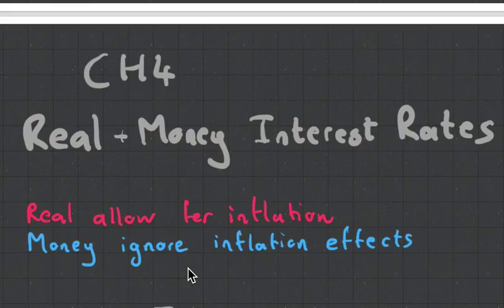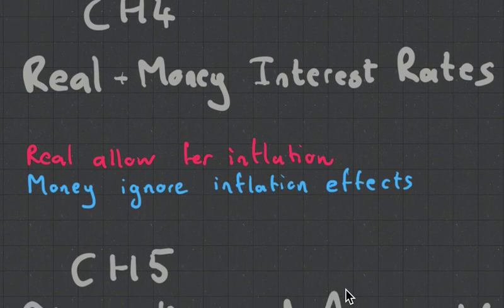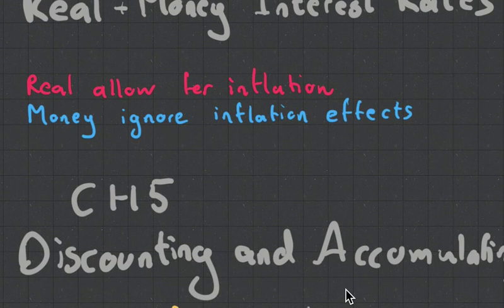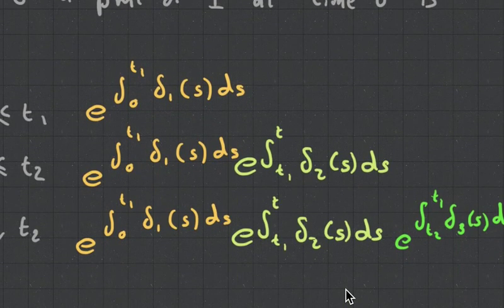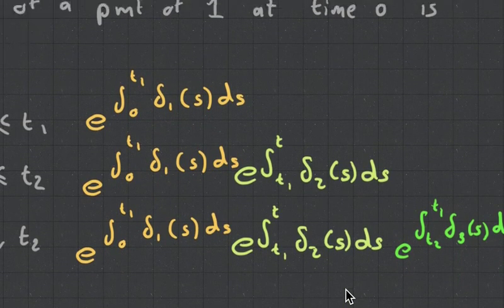Check that out. Next chapter is on discounting and accumulating. And it's going to be, as you can see, much more mathematical than this chapter that we've just spoken about.